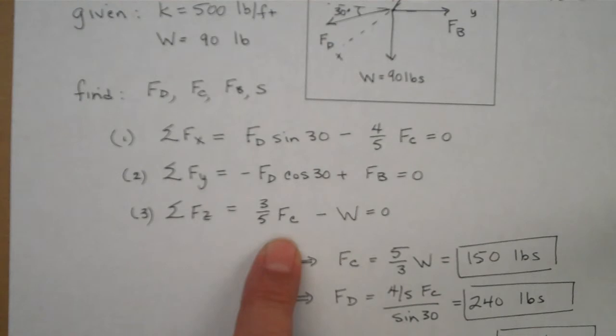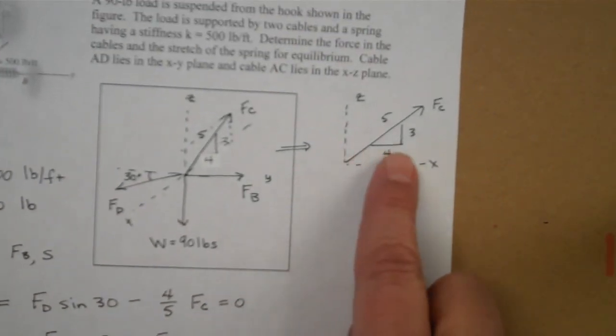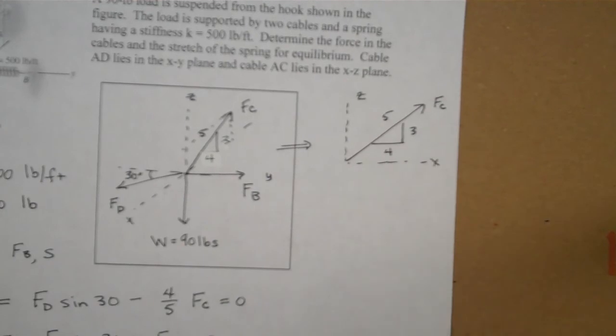So the important part on this one is doing your summation of forces, setting them equal to 0. And we're introduced to a new notation in the fact that we're going to take a fraction of the force looking at our triangle. So 4 fifths is along the X direction and 3 out of the 5 or 3 fifths in the Z direction.